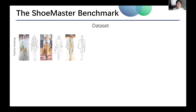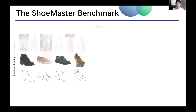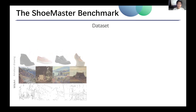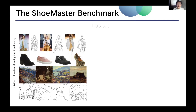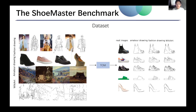The first style is professional fashion drawing, which has more details and lines more consistent with the real image. The second style is sketches drawn by amateurs, which have some abstractness and some difference from the outline of the real image. The third style is fine art, which is more abstract than amateur hand drawings. We trained three different TOM models and used them to generate three different styles of sketches for each shoe image to build the Shoemaster dataset.